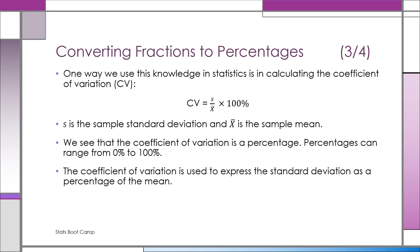We take the standard deviation of the sample, S, divided by the mean of the sample, X̄, and then multiply that fraction by 100%. The coefficient of variation is used to express the standard deviation as a percentage of the mean.